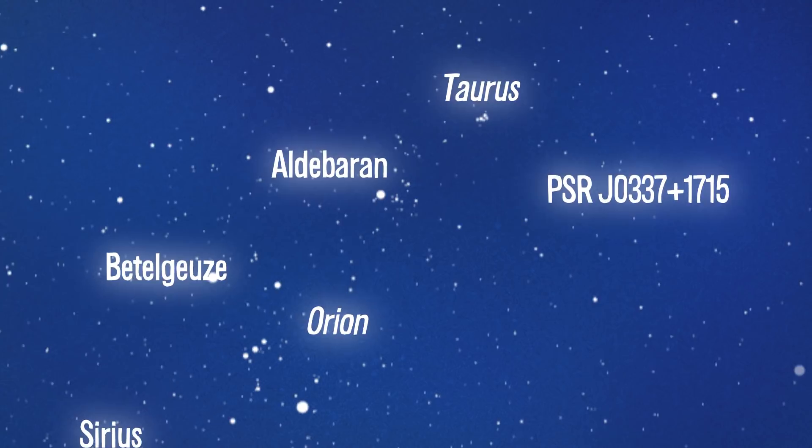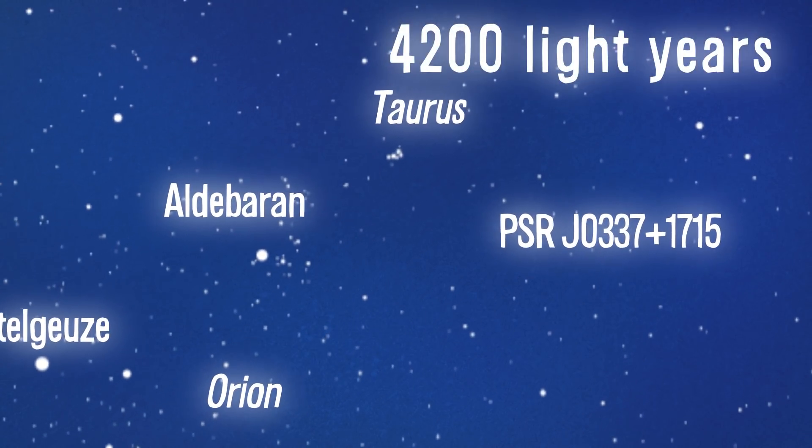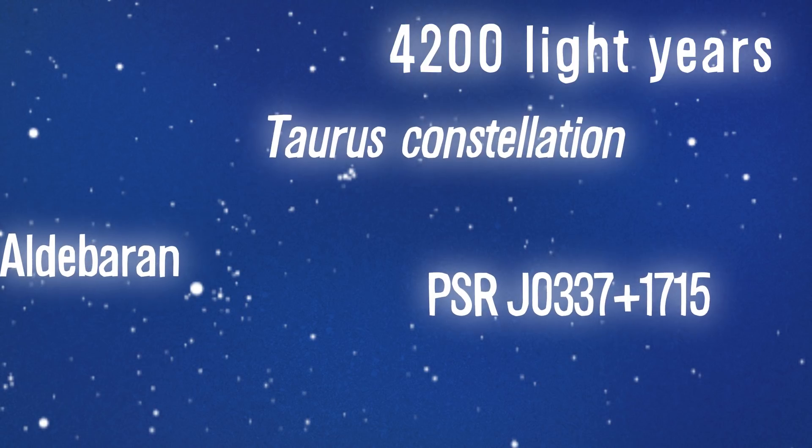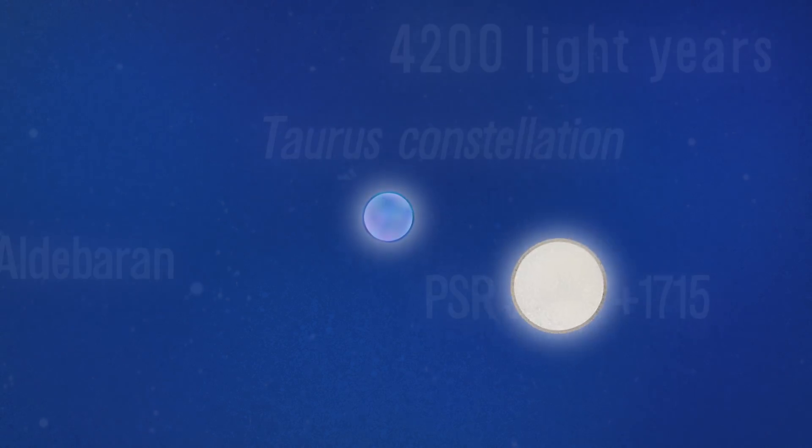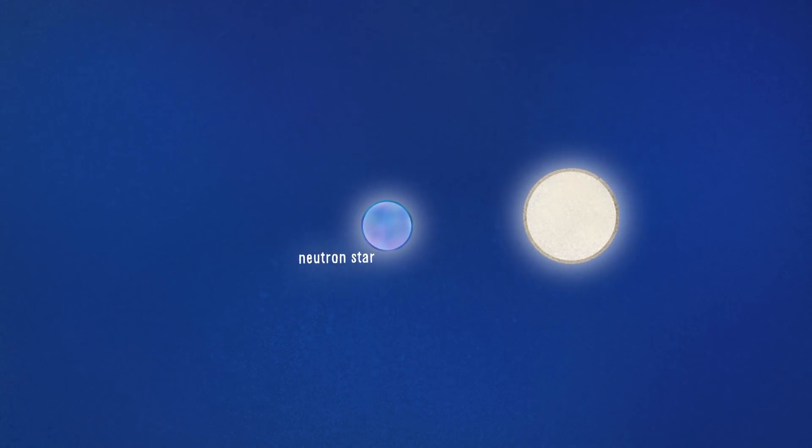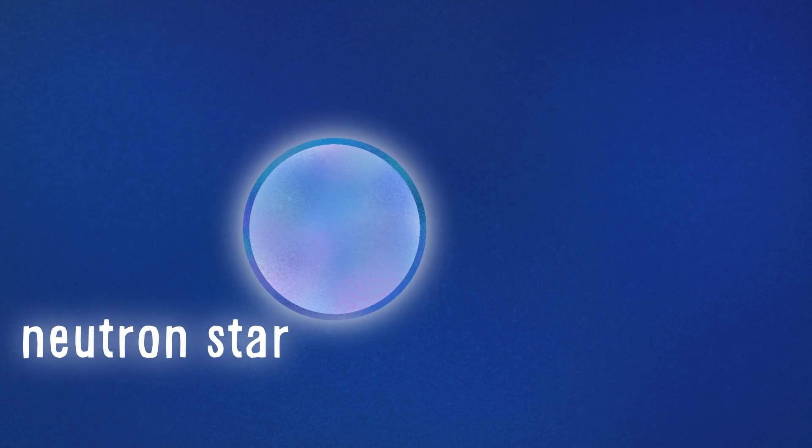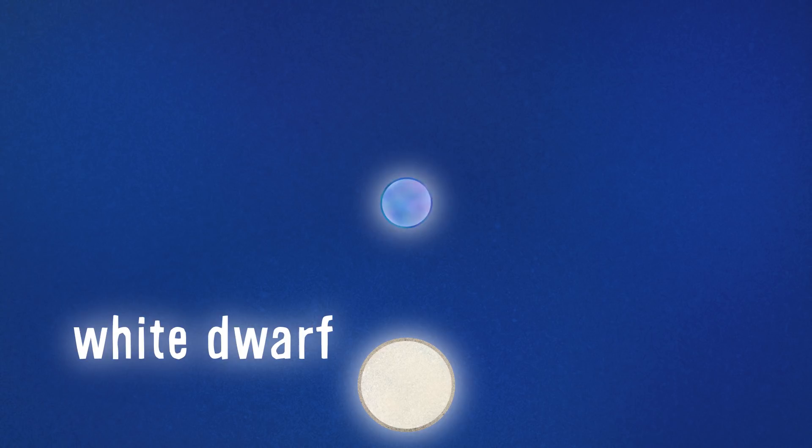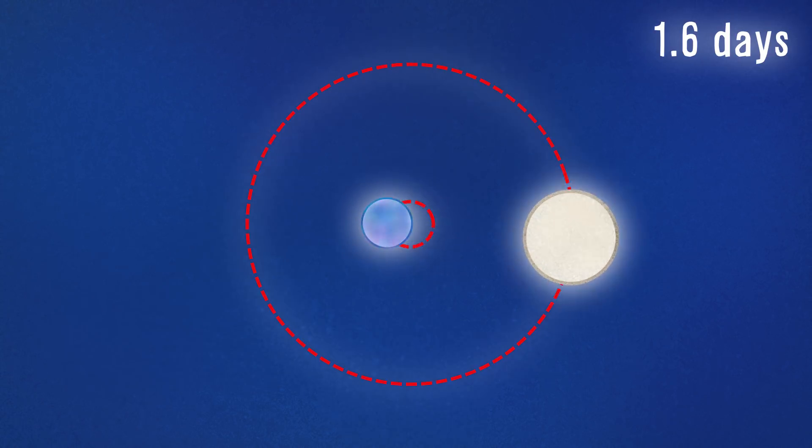PSR J0337+1715 is a triple star system at 4200 light years distance from the Earth in the constellation of Taurus. At the center of this system is an odd couple. One is a neutron star, which has the mass of 1.44 Suns crammed into a sphere the size of Amsterdam. The other is a white dwarf, a small star one-fifth the mass of our Sun. They circle around each other every one and a half days.